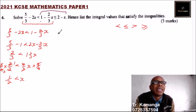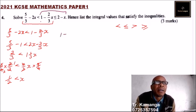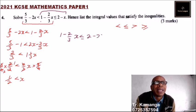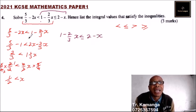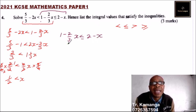The other part is: 1 minus 2 over 3x, less than or equals to 2 minus x. Just as before, we put like terms together, taking x to the other side, where it changes sign to positive. So we have x minus 2 over 3x on the left side.